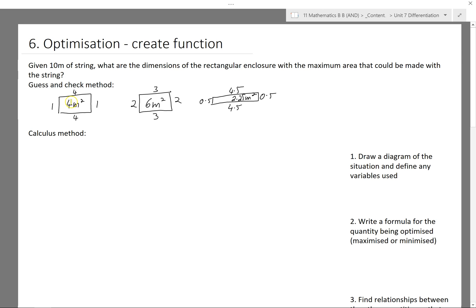If we just look at the ones we've got, I've got 4 meters squared, 6 meters squared and 2.25 meters squared. Of those that I've drawn so far, this one will have the maximum area. But I can't be sure that that one is actually the maximum. So I want to do it in a systematic way, using calculus, using optimization, to be sure that I've got the biggest rectangle. So in this calculus method, the first step is to draw a diagram of the situation and define any variables. So I'm going to draw just a rectangle.